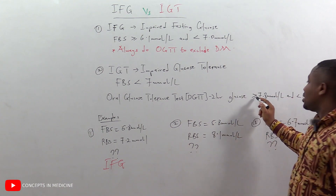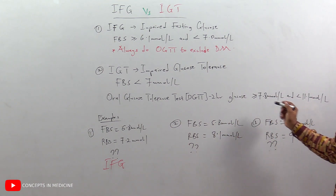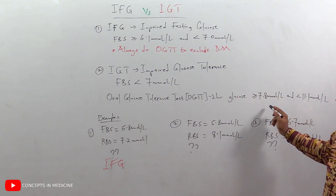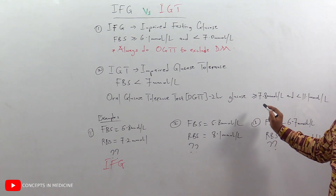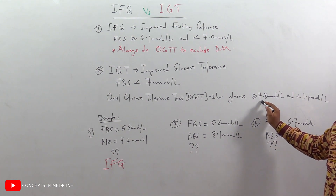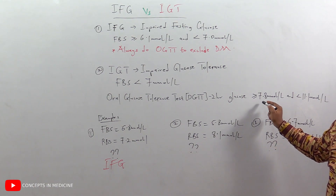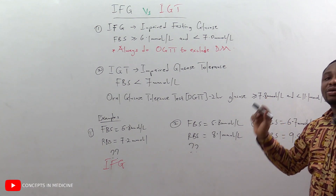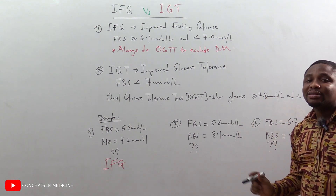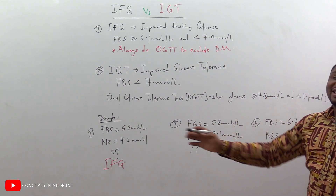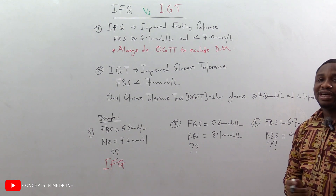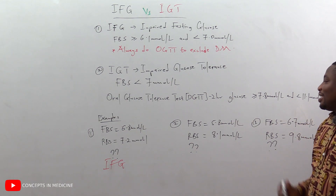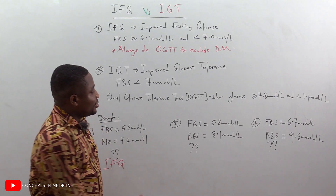Now for the random blood sugar of 7.2 — does it fall within the range for impaired glucose tolerance? No, it is less than the 7.8 landmark, meaning there is no impaired glucose tolerance. The answer for example one is impaired fasting glucose only.